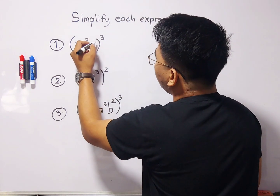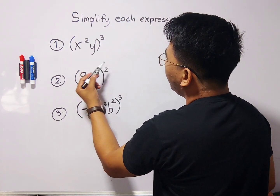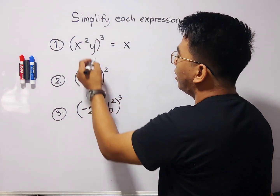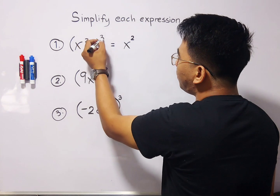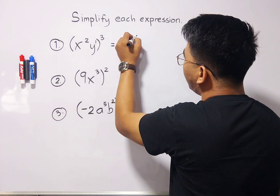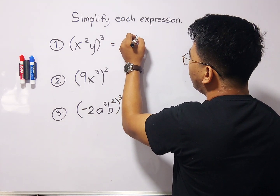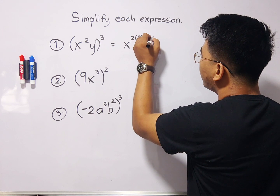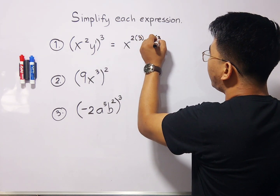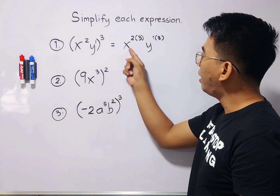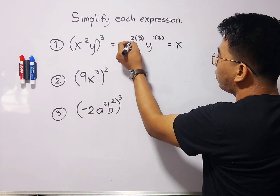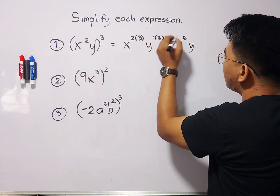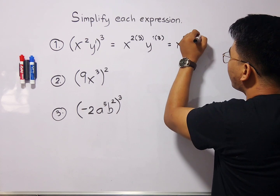The variable y has an exponent of 1. Doing this step by step: copy variable x with its exponent of 2, then multiply by the outside exponent of 3, giving x raised to 2 times 3. For y, copy y with exponent 1 times 3. Simplifying: x raised to 6, and y raised to 1 times 3, which equals 3. So the simplified form is x⁶y³.